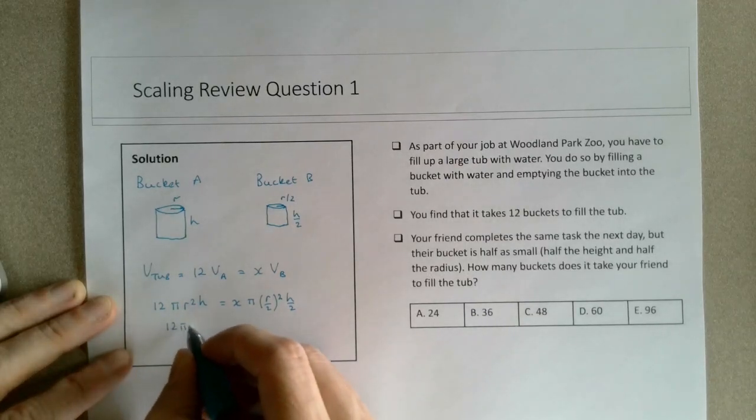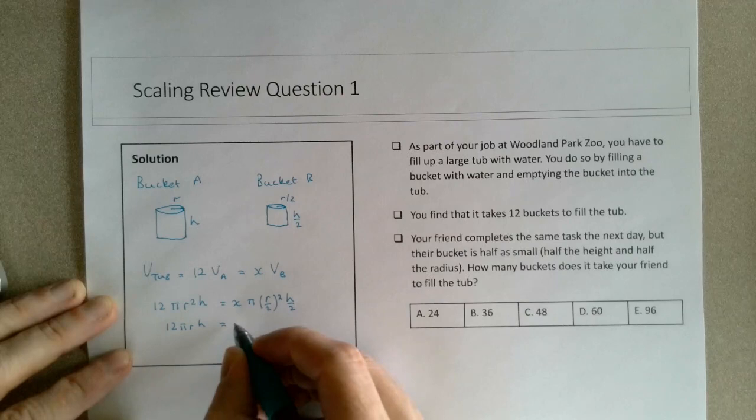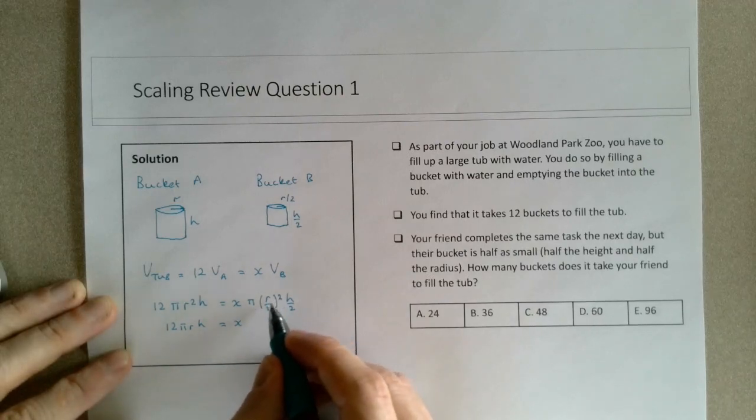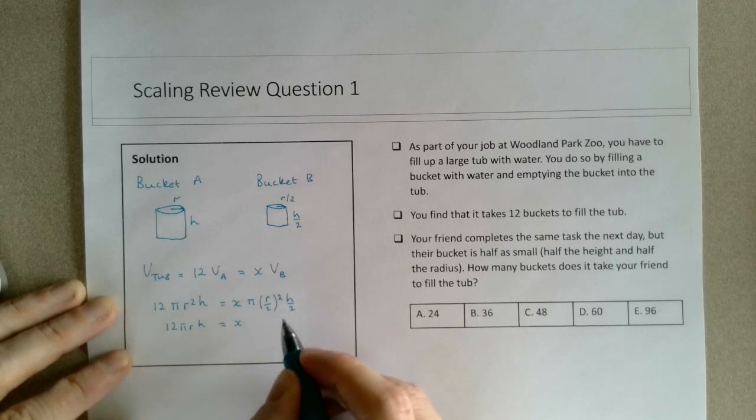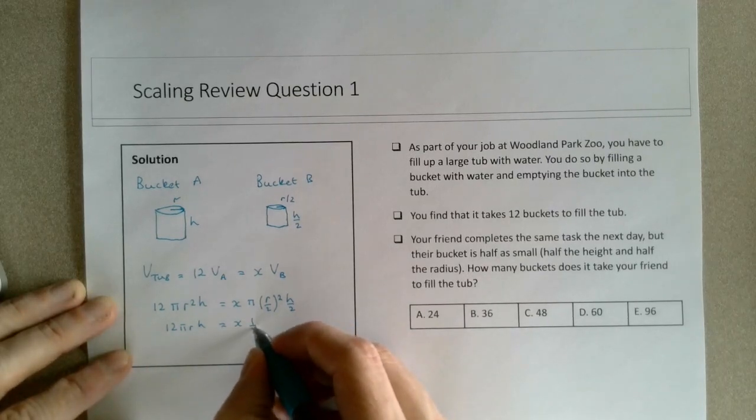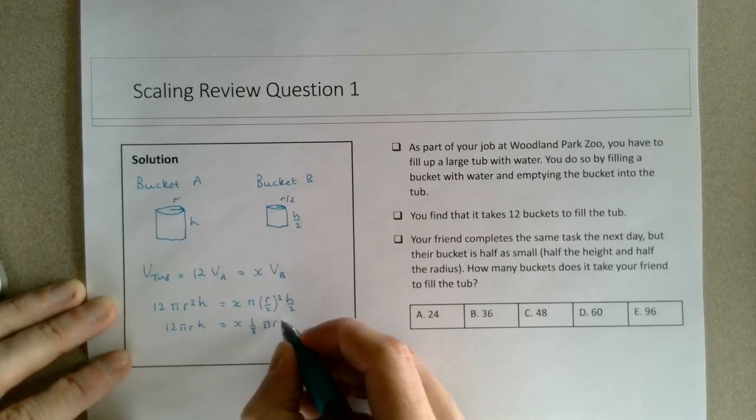So if we remove those parentheses, we would end up with pi r squared over 4 times h over 2, and this 4 times 2 would leave us 1 over 8, so that's 1 over 8 pi r squared h.